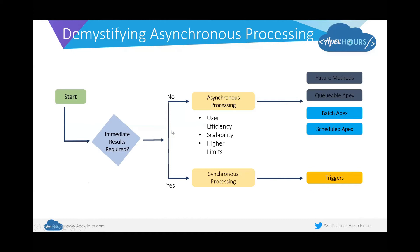There are different tools that the platform gives us for asynchronous processing. All this while, you learned about synchronous processing — Apex triggers are one tool the Salesforce platform gives us for synchronous processing. However, the platform also gives us additional tools specifically designed for asynchronous processing: batch Apex, scheduled Apex, queueable Apex, and future methods. For today's session, I will be only focusing on batch and scheduled Apex.